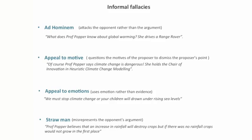Another example of an informal fallacy is the appeal-to-emotion fallacy, which uses emotion rather than evidence. For instance: 'We must stop climate change, or your children will drown in the rising sea levels.' And finally, the straw-man fallacy misrepresents the opponent's argument. For instance: 'Professor Popper believes that an increase in rainfall will destroy crops. But if there was no rainfall, crops will not grow in the first place.'